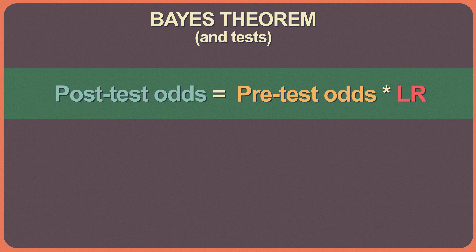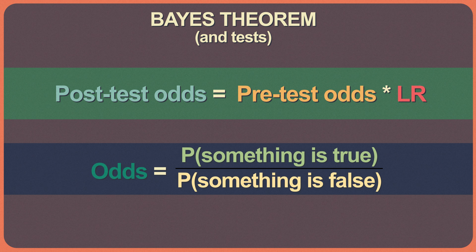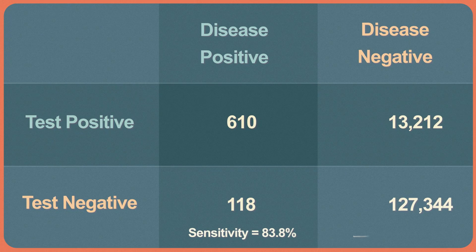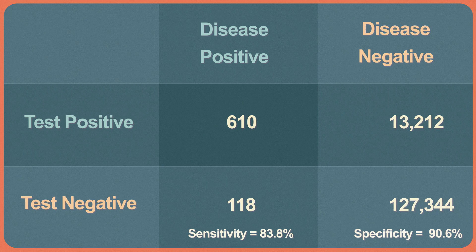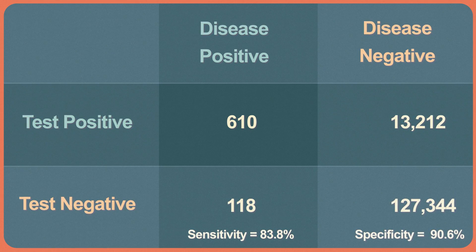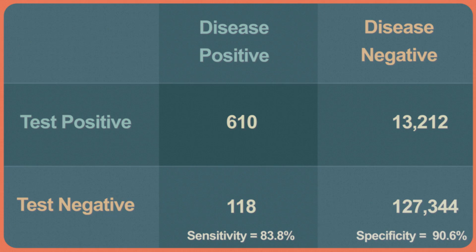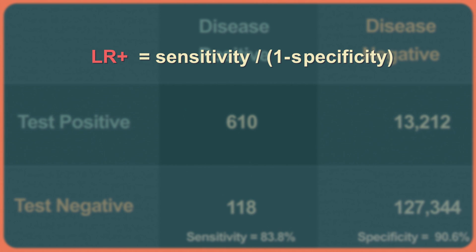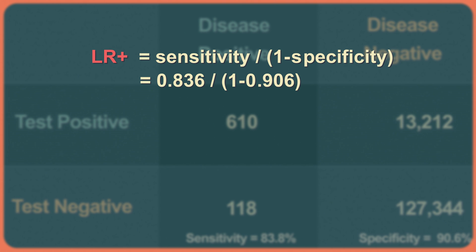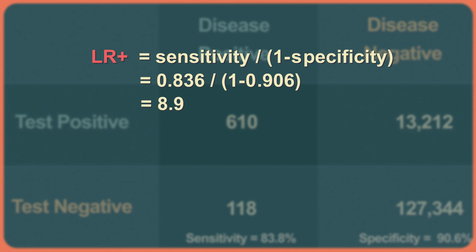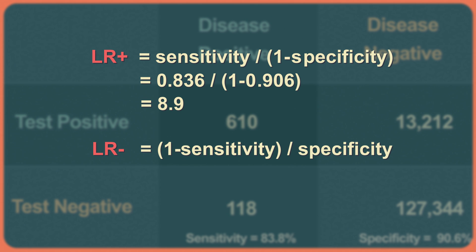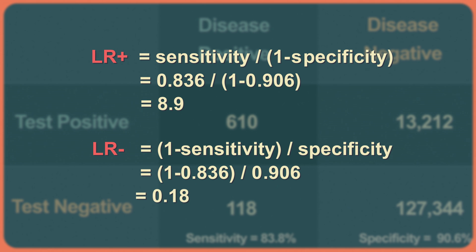Odds are not the same as probabilities. Odds are the probability of something being true over the probability of something being false. Positive likelihood ratio equals sensitivity over one minus specificity. A negative likelihood ratio is one minus sensitivity over specificity. Last week, we found that mammograms had a sensitivity of 83.8% and a specificity of 90.6%. So the positive likelihood ratio equals 0.838 over one minus 0.906, or 8.9. The negative likelihood ratio is one minus 0.838 over 0.906, or 0.18.